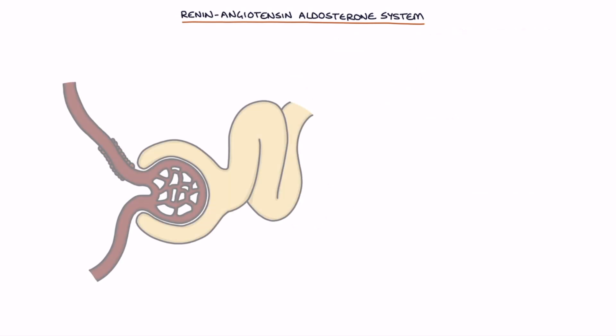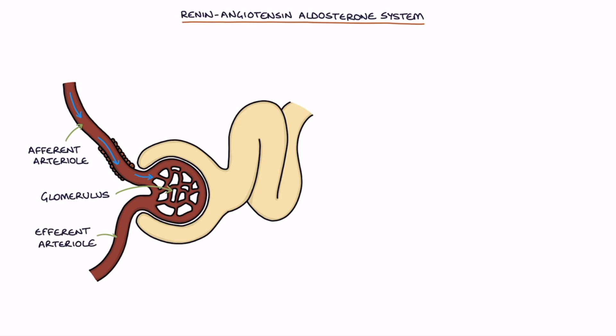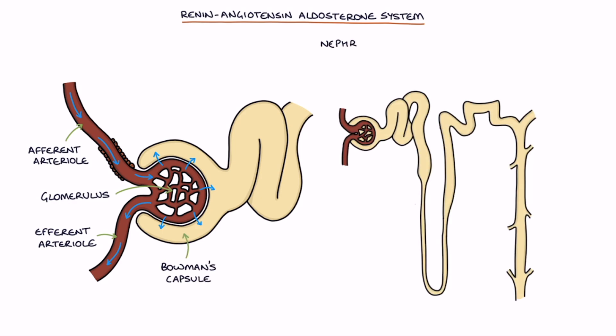At the start of the nephron is the glomerulus. The afferent arterioles bring blood into the glomerulus and the efferent arterioles drain blood out of the glomerulus. Fluid filters from the blood in the glomerulus into Bowman's capsule, the first part of the nephron. The filtered fluid is called filtrate.